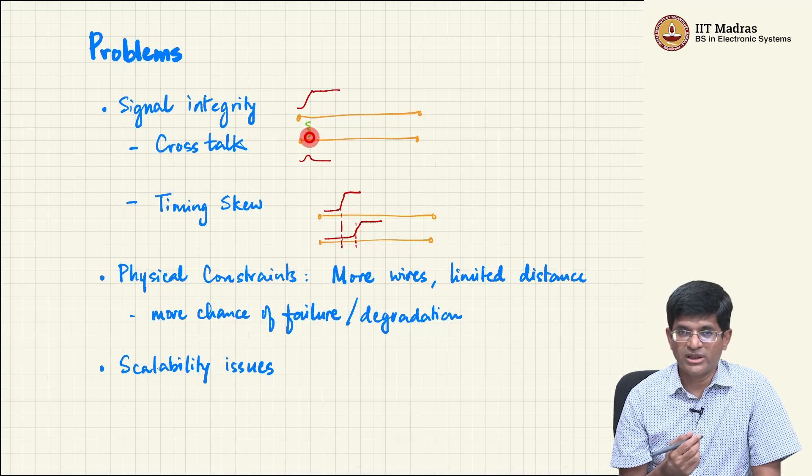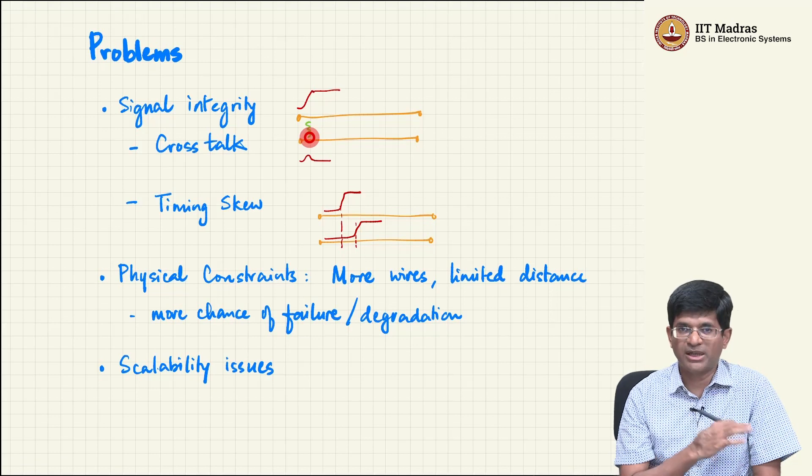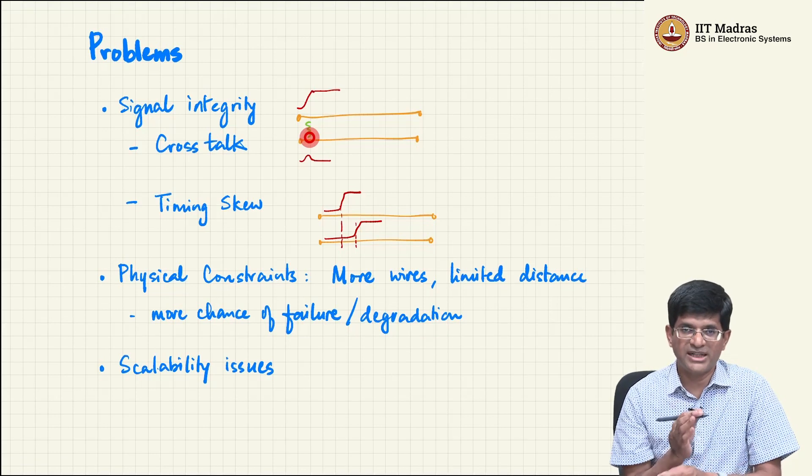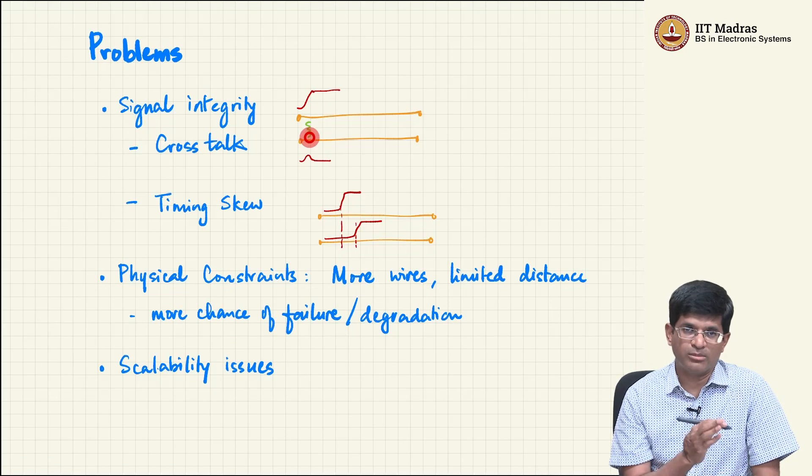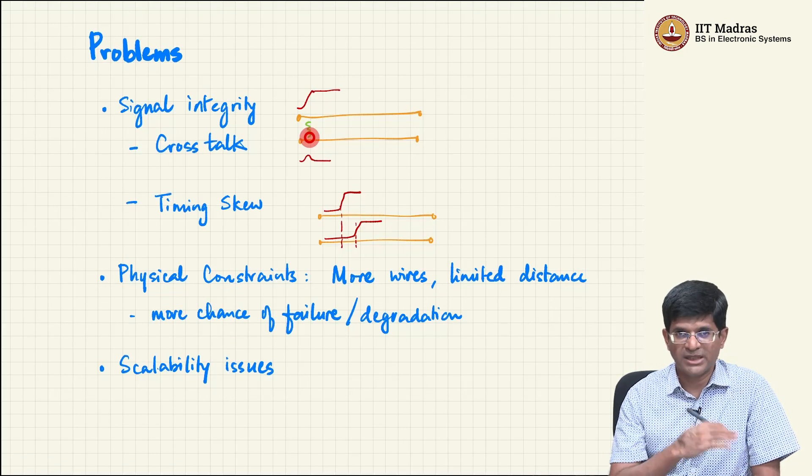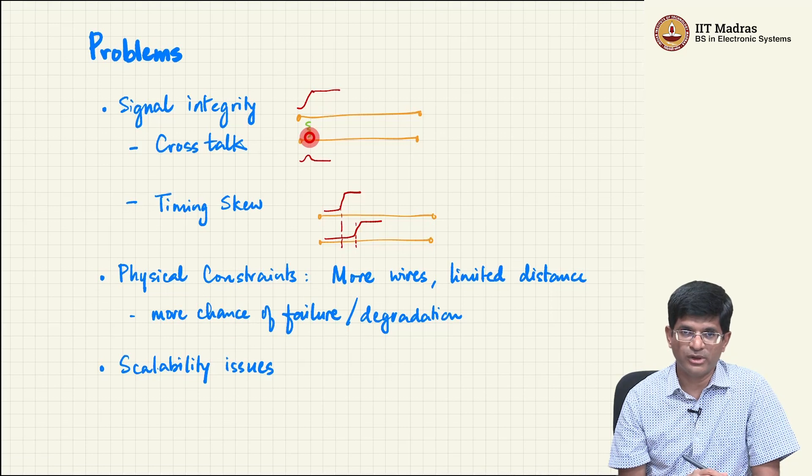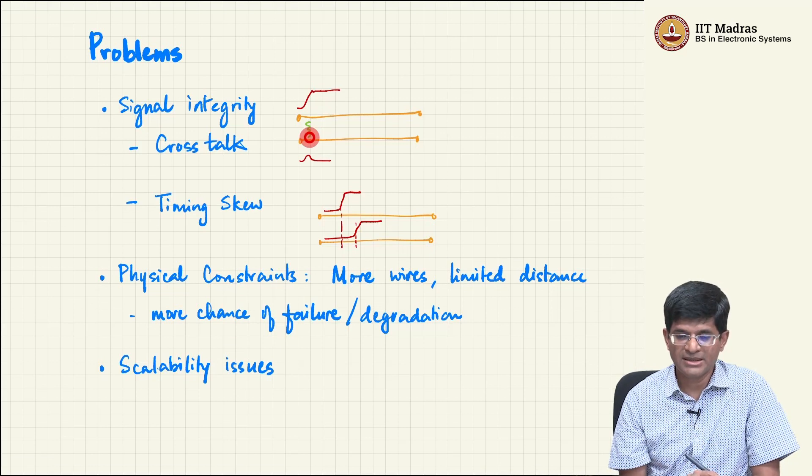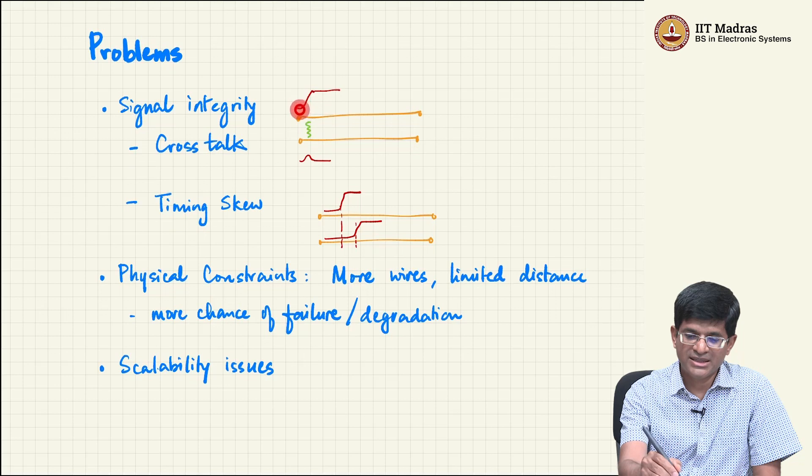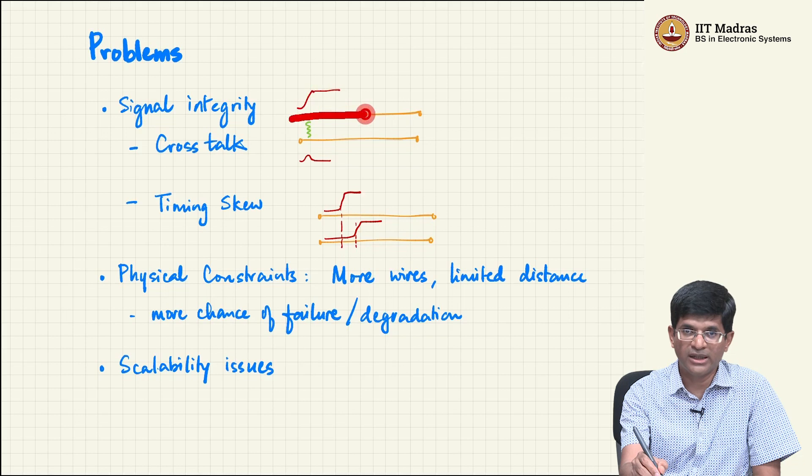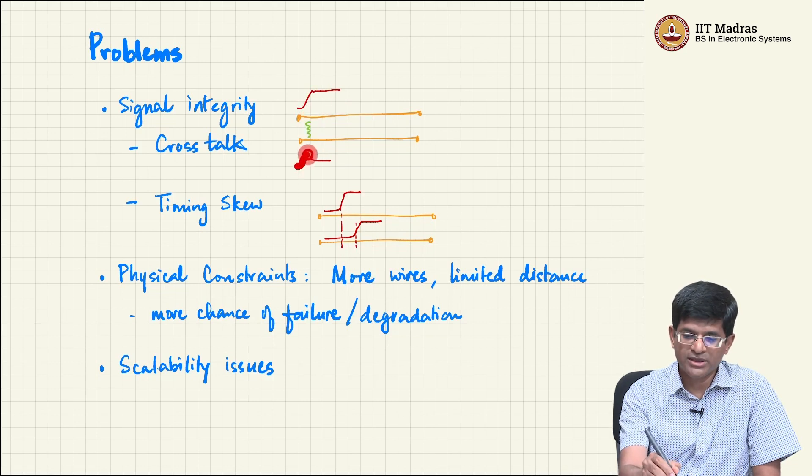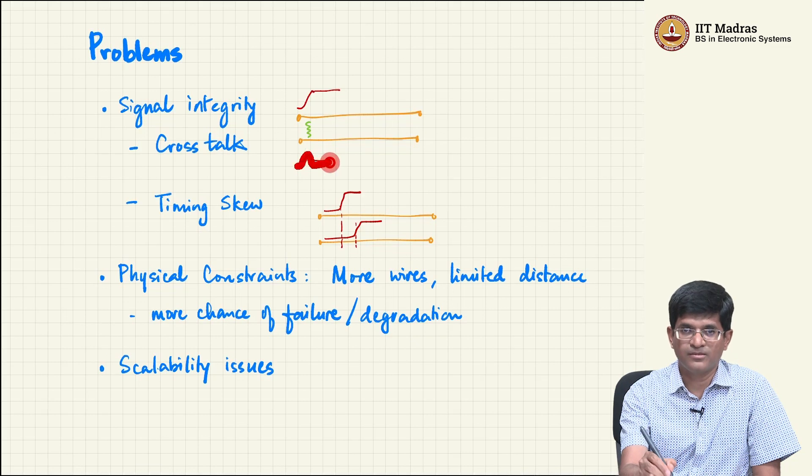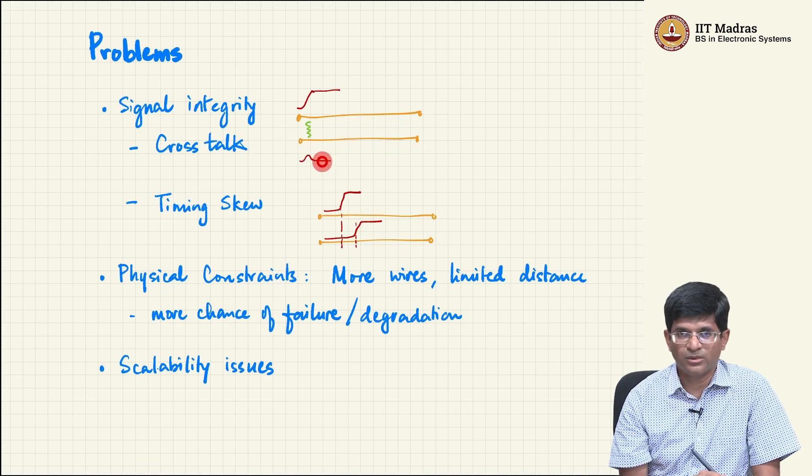In either case what that actually means is that just because of either capacitive because two metal plates separated by an insulator behave like a capacitance or because two metal plates can have a magnetic field that sort of flows between them and therefore behave like an inductance. Either way it is possible that a change in voltage on one side which after all causes some flow of current through one wire can be picked up by the other side and might end up causing at least a small glitch in the voltage on the other wire.